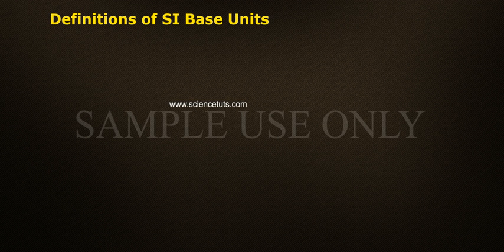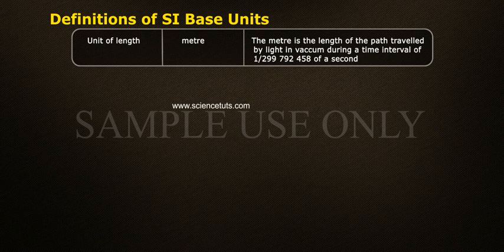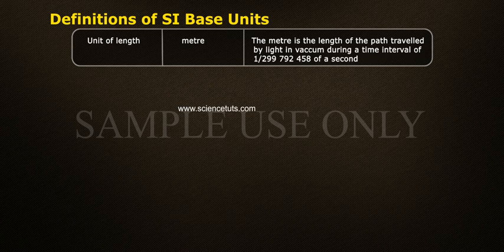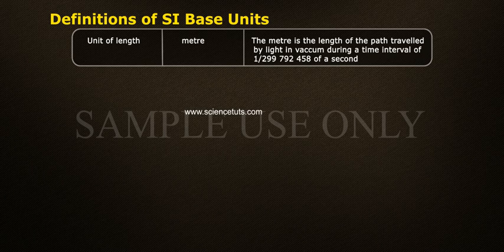Definitions of SI Base Units. Unit of Length: Metre. The metre is the length of the path travelled by light in vacuum during a time interval of 1 by 299,792,458 of a second.